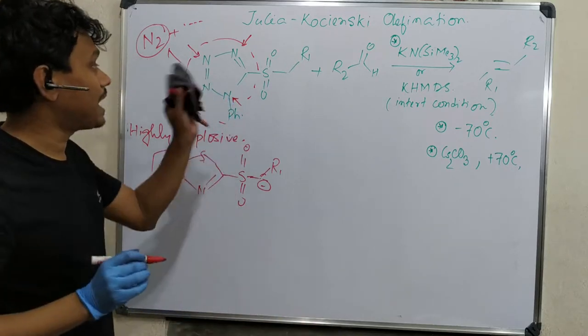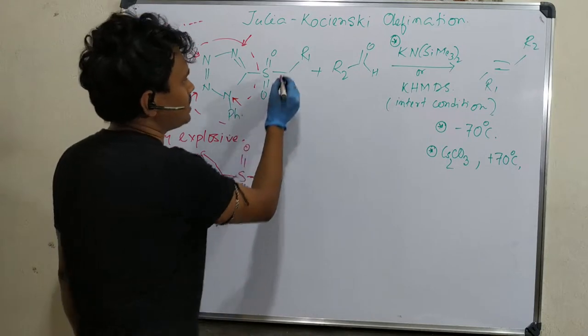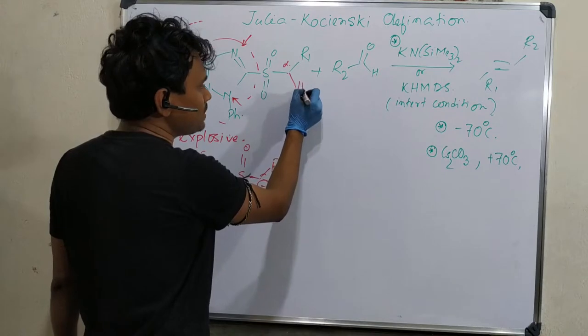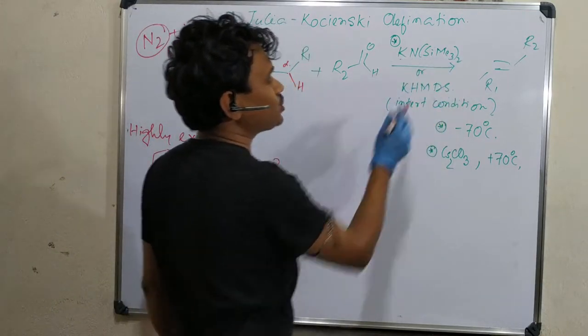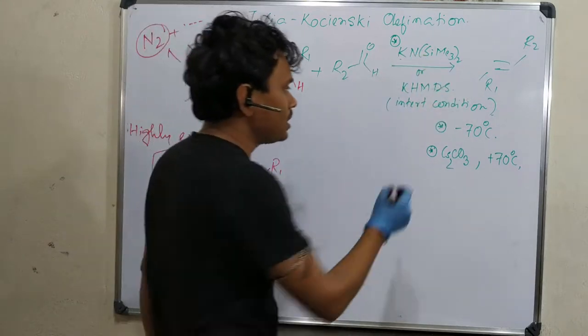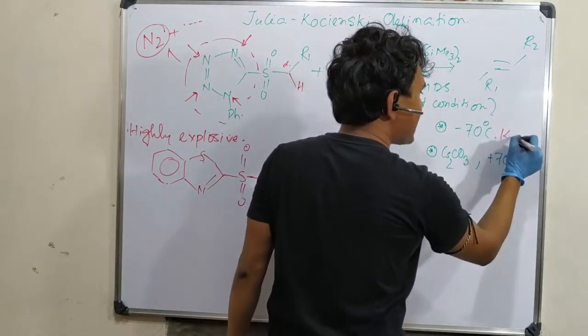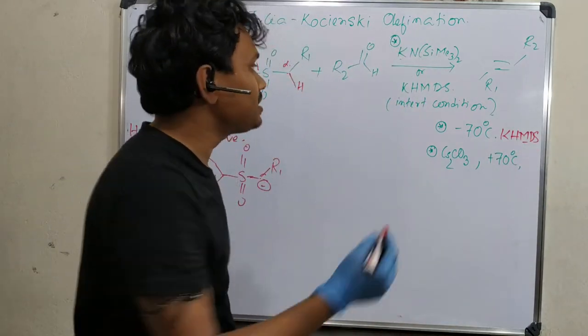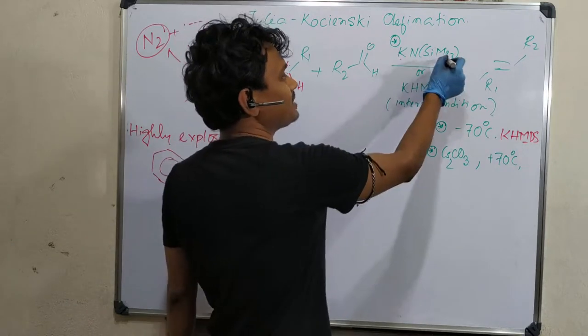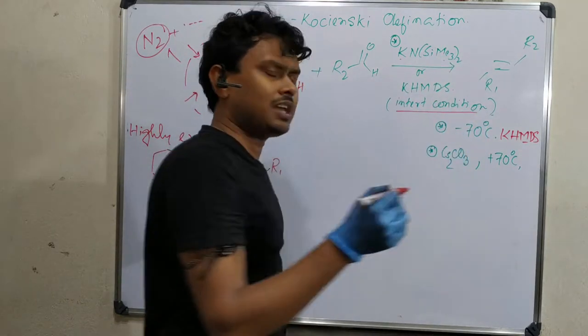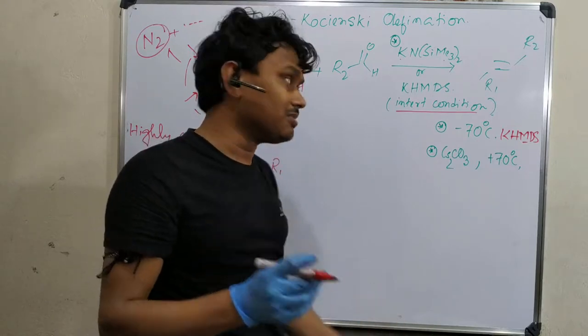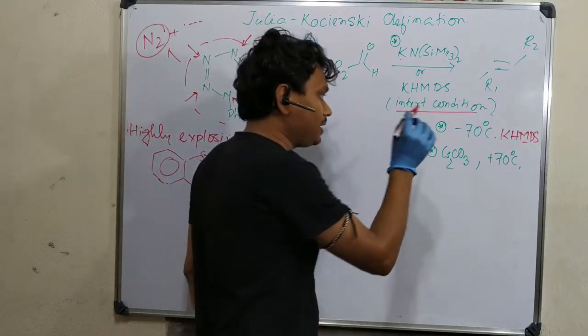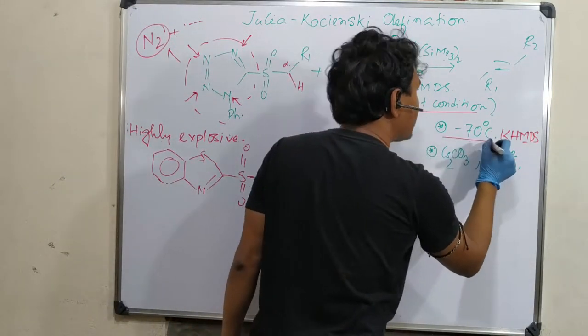This is the alpha position and the acidic proton is here, so this can be abstracted in presence of base. Actually here I have written K and base - this is KHMDS. Previously I showed lithium HMDS; this is the potassium version. When KHMDS is used, absolute anhydrous conditions are necessary. I have used this reagent in my lab. It needs strict inert and anhydride dry gas - even argon should be dried properly.